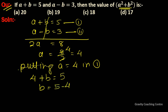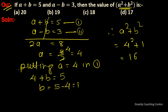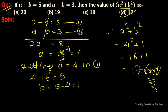So b equals 5 minus 4, which equals 1. Therefore, a squared plus b squared equals 4 squared plus 1 squared, which equals 16 plus 1, equals 17. So the answer is 17, and option D is the correct answer.